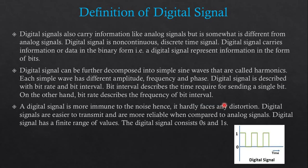The Digital Signal also carries Information like the Analog Signal, but is somewhat different. The Digital Signal is non-continuous and discrete with time, meaning at any given moment of time, we can only read at that point. A Digital Signal carries Information or Data in a Binary form — it represents information in the form of bits, that is 0s or 1s. As shown here, this is 0 and this is 1 — it can be either 0 or 1, just like a Simple Switch that can be off or on: only two states.